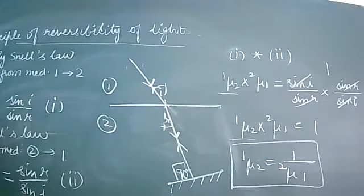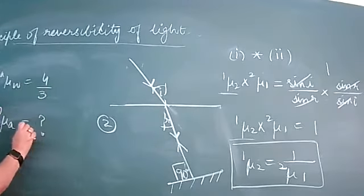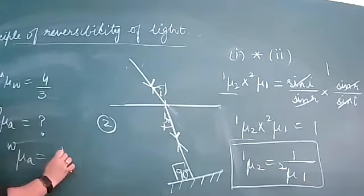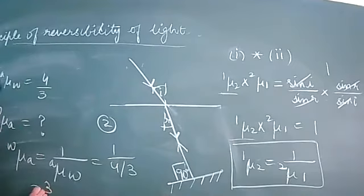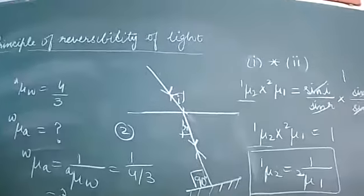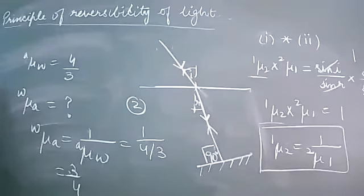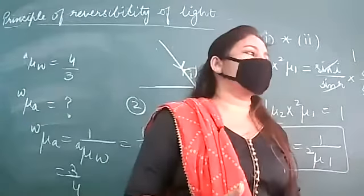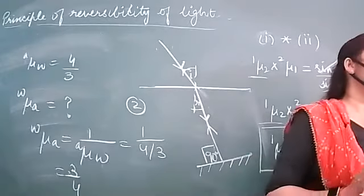Example: The refractive index of water with respect to air is 4/3. If you want to find the refractive index of air with respect to water, use the formula: a_mu_w = 1 / (w_mu_a) = 1 / (4/3) = 3/4. Similarly, the refractive index of glass with respect to air is 3/2, so air with respect to glass will be 2/3. Aise koi bhi diya ho to aap usko invert kar do — you will get the other one.